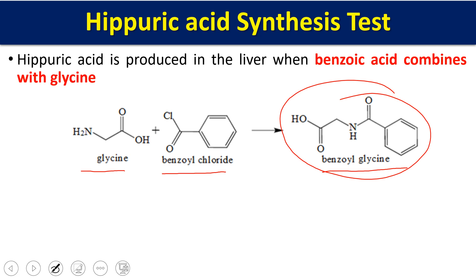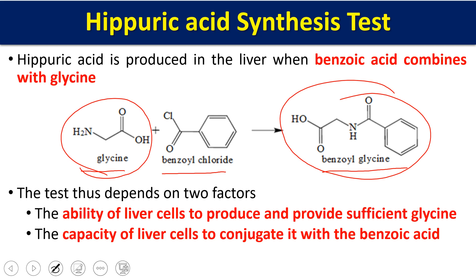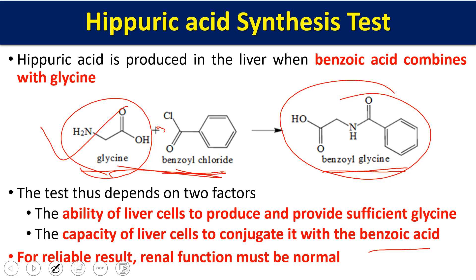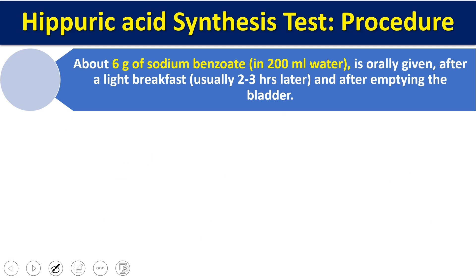Two important factors decide this reaction: first, the liver should synthesize glycine in sufficient amounts (glycine is not provided externally); second, the liver should conjugate it with benzoic acid. Both reactions take place in the liver only. For reliable results, the patient should not have any kidney disorders — kidney function must be normal.